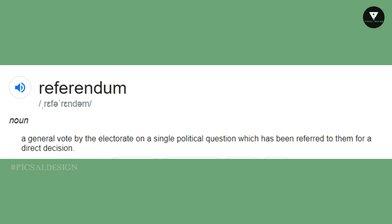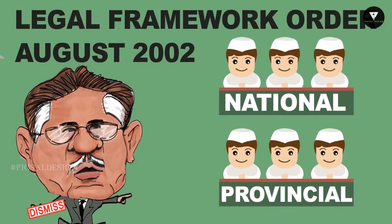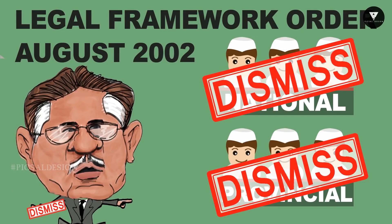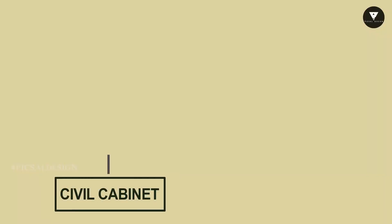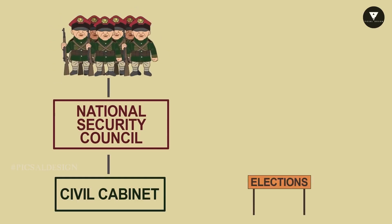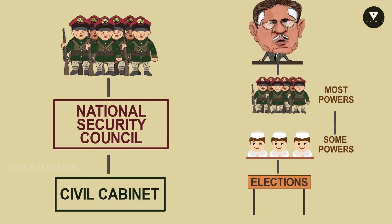In 2002, he also held a referendum in the country that granted him a five-year extension. A referendum is a direct vote in which the electorate is asked to either accept or reject a particular proposal. He issued a legal framework order, according to which the president can dismiss the national and provincial assemblies. Later, elections were held to the national and provincial assemblies and elected representatives were granted some powers.